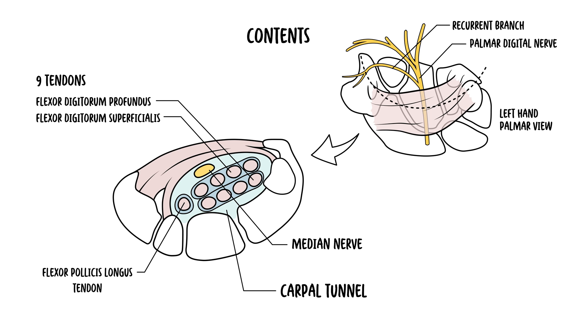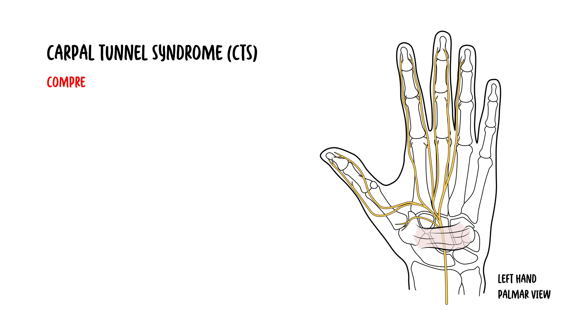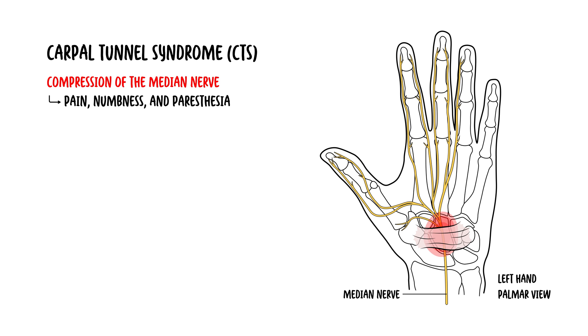This leads us to carpal tunnel syndrome. Carpal tunnel syndrome manifests from the compression of the median nerve within the carpal tunnel, leading to pain, numbness, and paresthesia, primarily in the lateral three and a half digits. It represents 90% of all nerve compression syndromes, so it is very common. Carpal tunnel syndrome shows a high prevalence in women, particularly between the ages of 45 to 60 — essentially the menopausal age group.